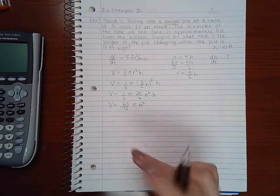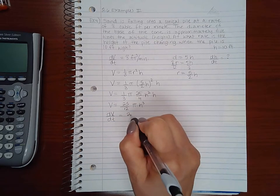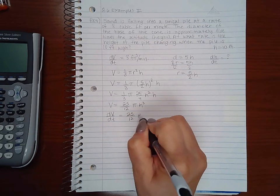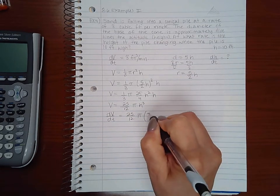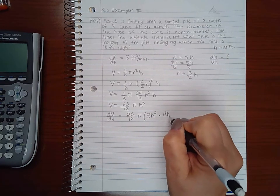So the derivative of V is dV/dt equals 25/12 π is my constant multiplier. The derivative of h³ is 3h² times dh/dt.